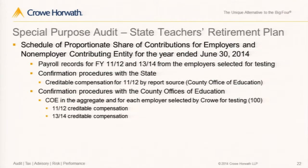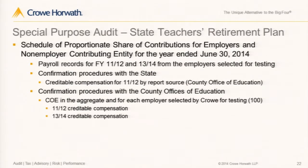There were challenges in getting comfortable with three different sets of compensation. We used information obtained from each of the employers through substantive test work, and also used confirmation procedures with the county offices of education. In many cases, the employers themselves report to CalSTRS through a CalSTRS secure employer website through their county office of education, which was an additional item to consider in developing the audit approach to get comfortable with the numbers actually submitted to the system used to determine contributions.